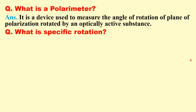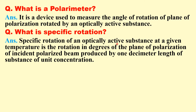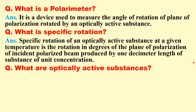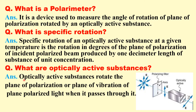What is specific rotation? The specific rotation of an optically active substance at a given temperature is the rotation in degrees of the plane of polarization of an incident polarized beam produced by one decimeter length of the substance at unit concentration. What are optically active substances? Optically active substances rotate the plane of polarization (or plane of vibration) of plane polarized light when it passes through them. The electric field vector angle changes by θ degrees — these substances are called optically active.